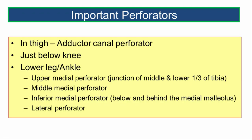The important perforator veins: In the thigh, we have the adductor canal perforator or Hunterian perforator. Just below the knee, there are perforators. At the lower leg or ankle, these include the upper medial perforator at the junction of the middle and lower one-third of the tibia, the middle medial perforator midway between the upper and inferior medial perforators, and the inferior medial perforator below and behind the medial malleolus. At the lower leg there is also a lateral or fibular perforator.